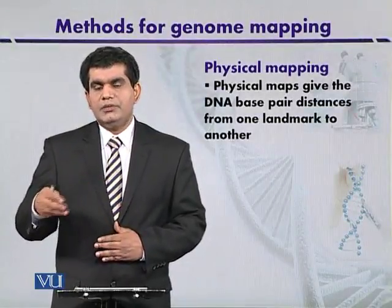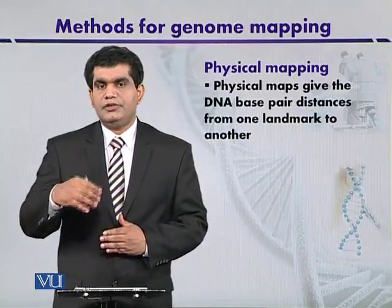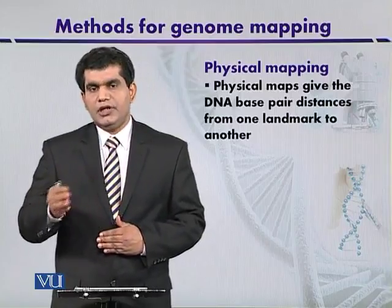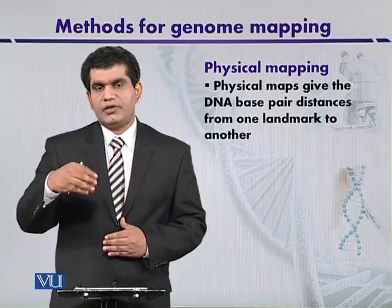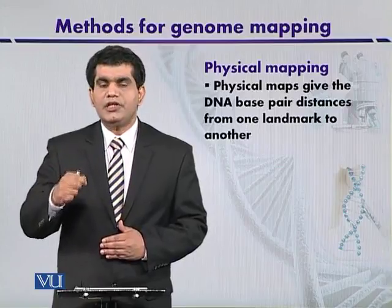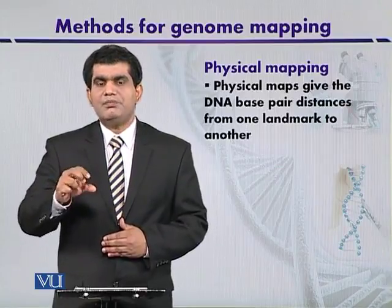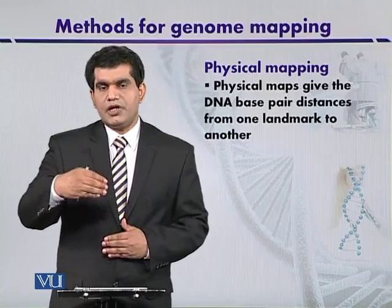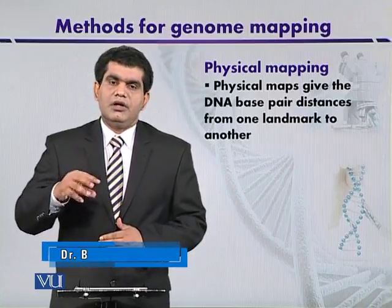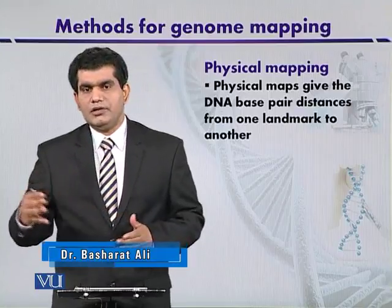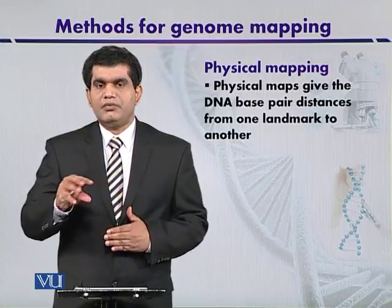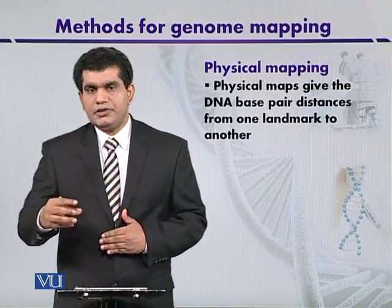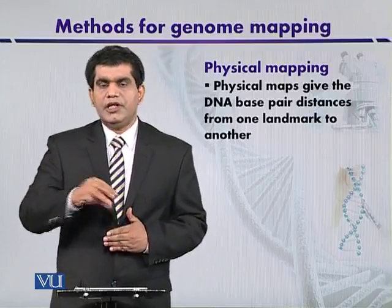Physical maps, as discussed in the previous topic, differ from genetic linkage maps in that they can pinpoint the physical location of genes. They can also determine the genetic distances between different landmarks based on the number of nucleotide bases — that is, how one genetic marker is separated from another.